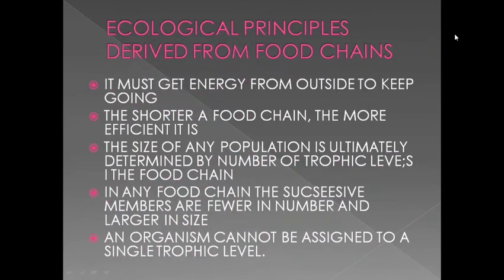Now we can see some characteristics of the food chain. The food chain should get energy from outside to sustain itself, so the main source of energy is our sun. The food chain with fewer trophic levels is more efficient because we have seen that energy is lost at each level. The more trophic levels in a food chain, the smaller the size of population at each higher level.